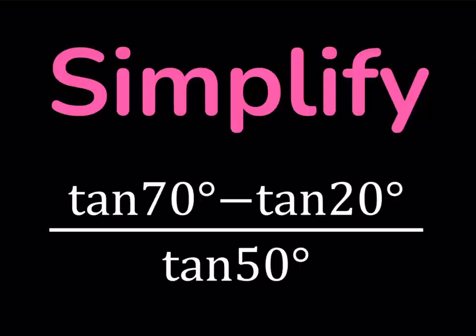Hello everyone, in this video we're going to be simplifying a trigonometric expression. So we have tangent 70 degrees minus tangent 20 degrees, and that is divided by tangent 50 degrees. And we're going to simplify this expression, so let's take a look.